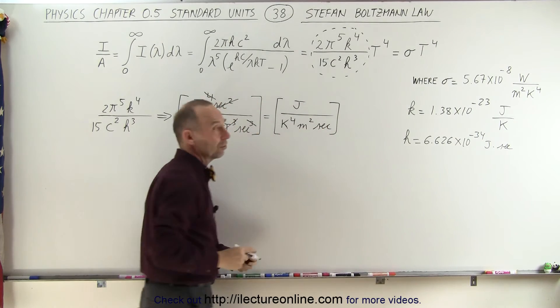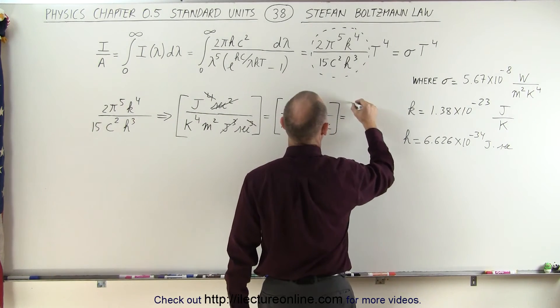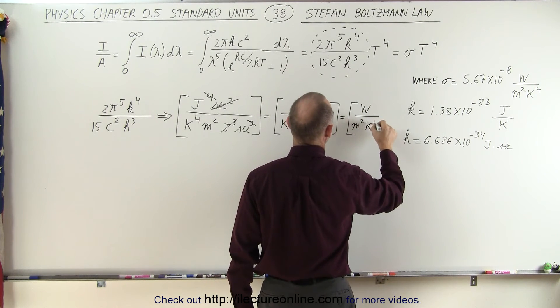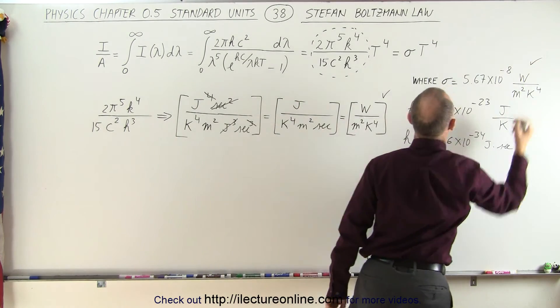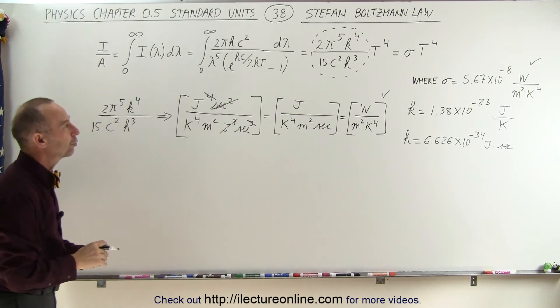Now, joules per second, those are units of watts, so this can now be written as watts per meter squared Kelvin to the fourth power, and sure enough, that is indeed the units we were looking for. So those are the units for the Stefan-Boltzmann constant.